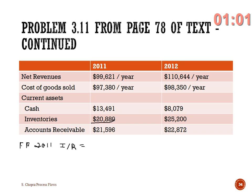So we use the cost of goods sold for the throughput, and those inventory figures from the balance sheet for the inventory in Little's Law.